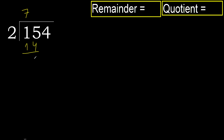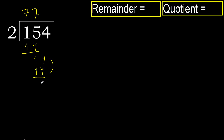Subtract 1, next. 14. 2 multiplied by 8 is 16, 16 is greater. Multiply by 7: 14 is not greater. Subtract 0, next.